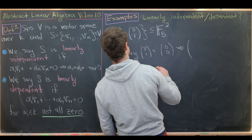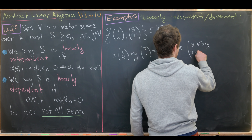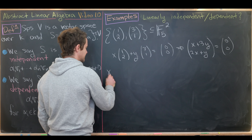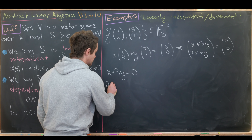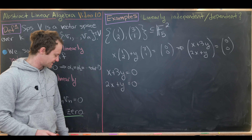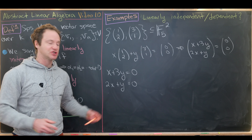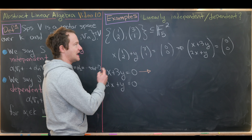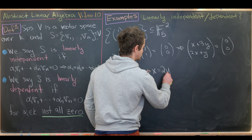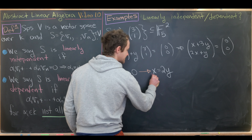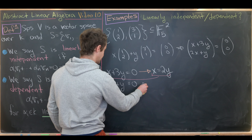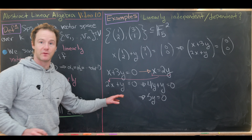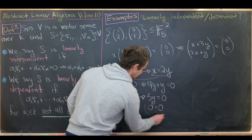This gives us x + 3y = 0 and 2x + y = 0 in F5. Using substitution: x = -3y = 2y in F5. Plugging into the second equation gives 4y + y = 5y = 0. But in F5, 5 = 0, so this reduces to 0 = 0, which is true for any y.